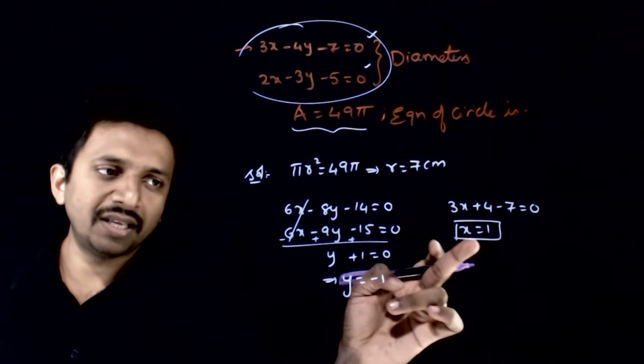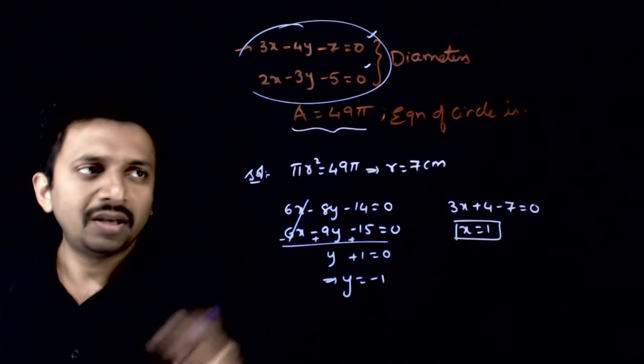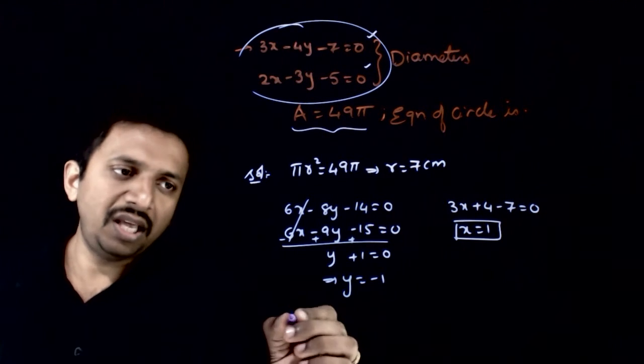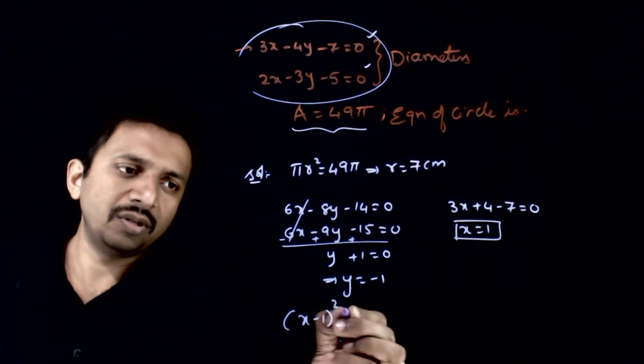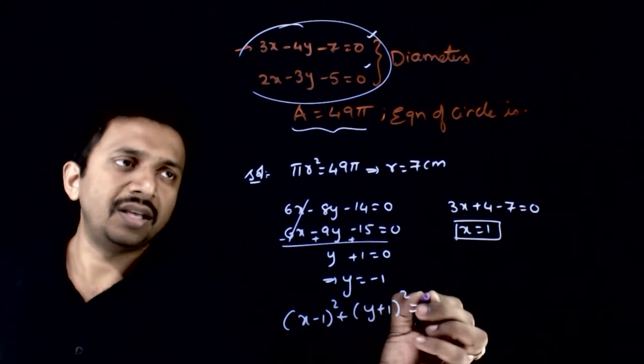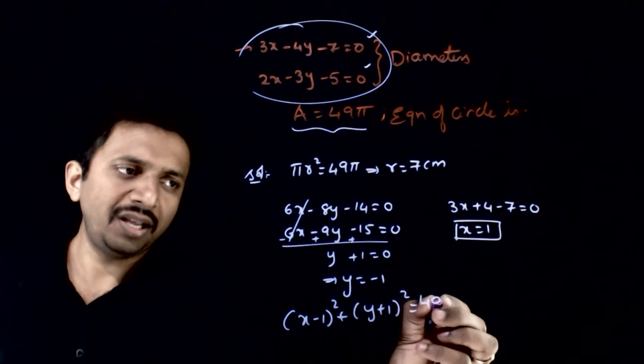The center of the circle is (1, -1), and radius is equal to 7. So, the equation of circle is (x - 1)² + (y + 1)² = r² = 49.